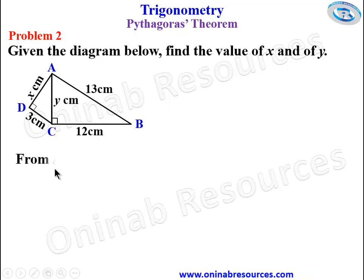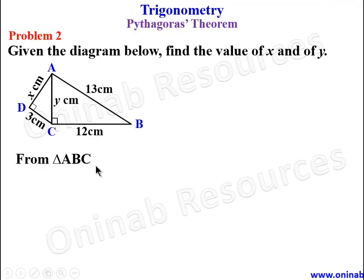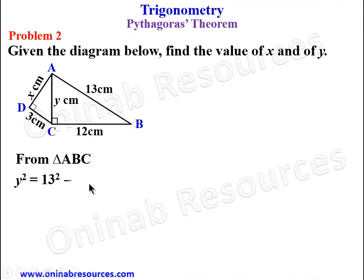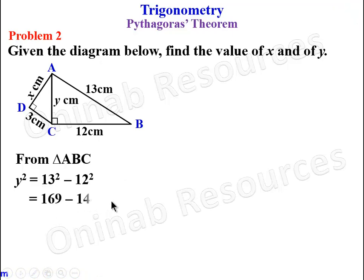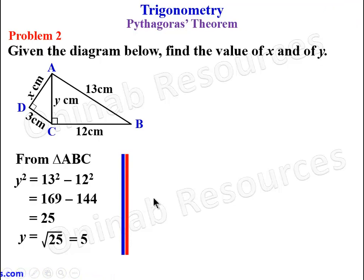From triangle ABC, AB is the hypotenuse since it faces the right angle. Y squared is equal to 13 squared minus 12 squared: 169 minus 144, giving 25. Since Y squared equals 25, Y is the square root of 25, which gives 5. We now go ahead to find X.